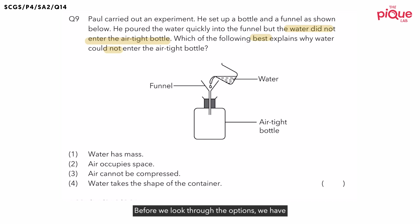Before we look through the options, we have to first understand what is going on in this diagram. Now if we were to look at this diagram, we have an airtight bottle. It is actually empty. But now my question to you is, is the bottle truly empty? Think about it. What can you actually find in the bottle that is invisible? You can actually find air in the bottle. Now is air matter? Yes, air is matter.